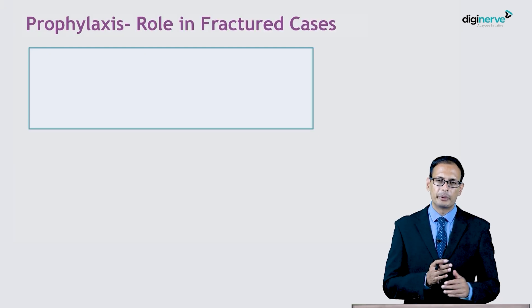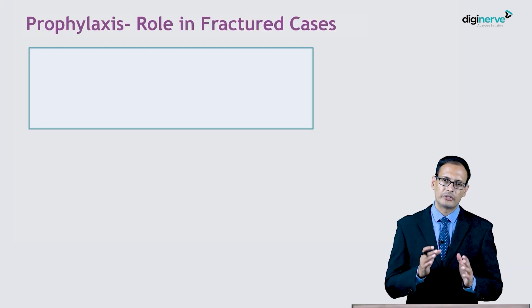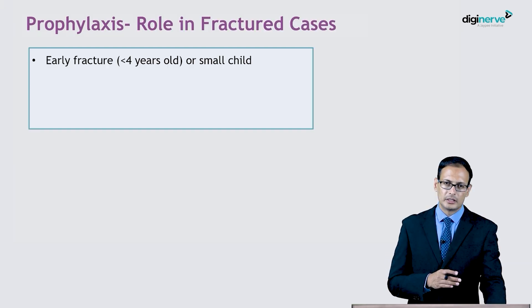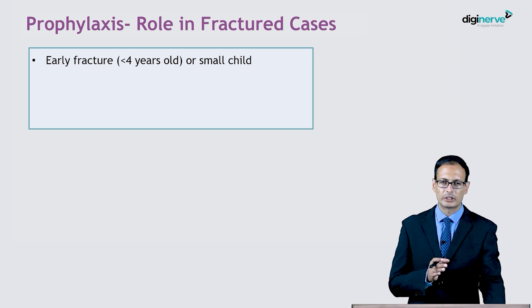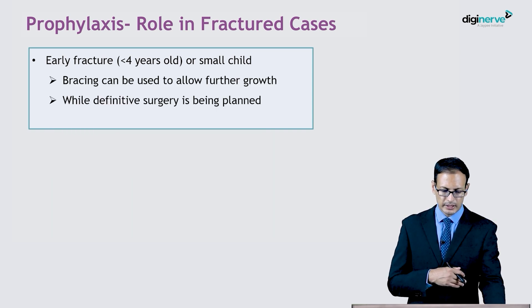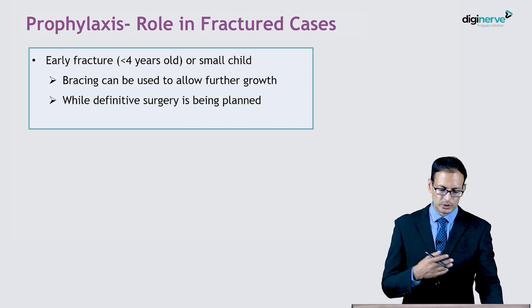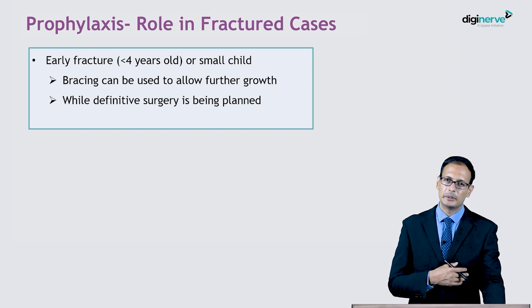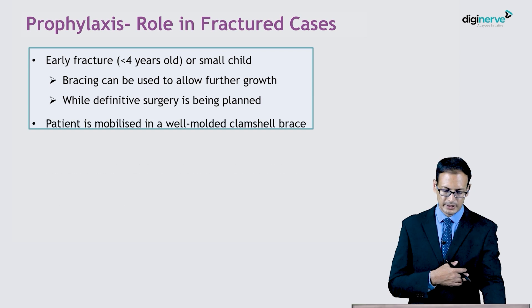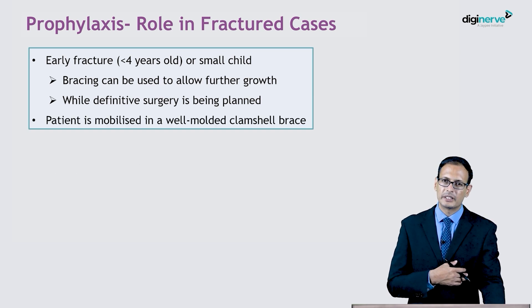What is the role of prophylactic braces in frank pseudoarthrosis? If the child is very young or there is an early fracture — for example, less than 4 years old — bracing can help to allow further growth while definitive surgery is being planned and deferred. The patient is mobilized in a well-molded circumferential clamshell brace.